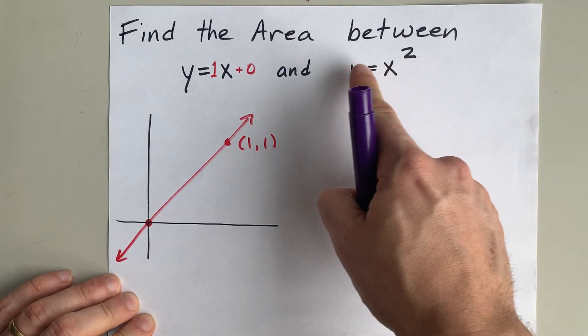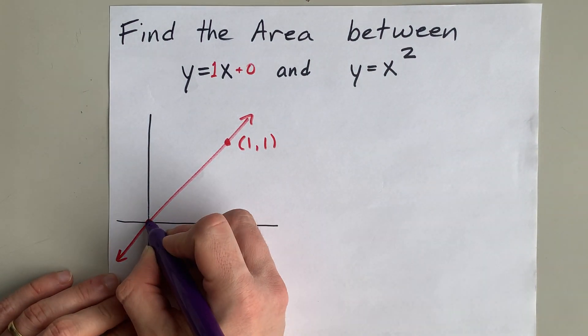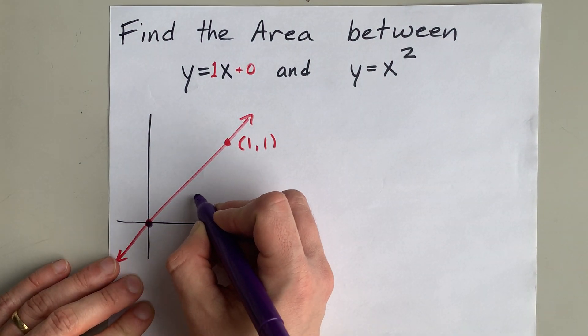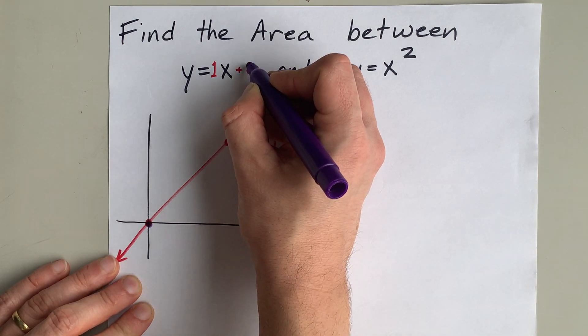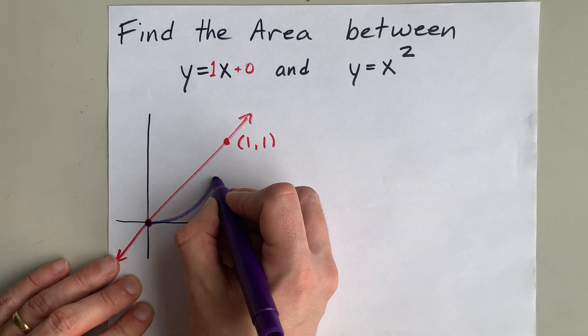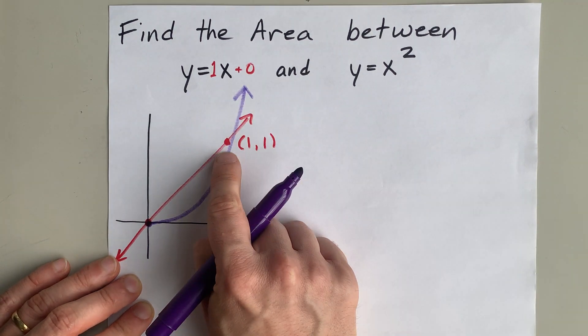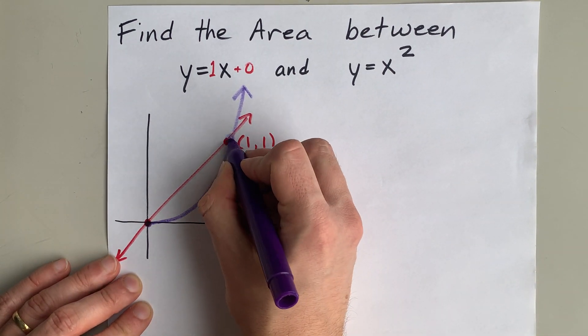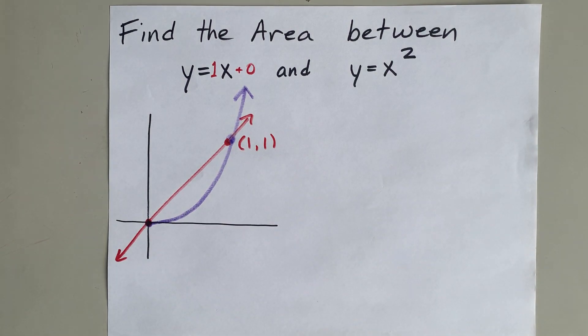y equals x squared is a parabola that starts at 0, 0, goes through 1, 1, and then 2, 4. So that curve is going to look something like this. Well, it should have gone through the point, but that's close enough, right? That's where they meet.